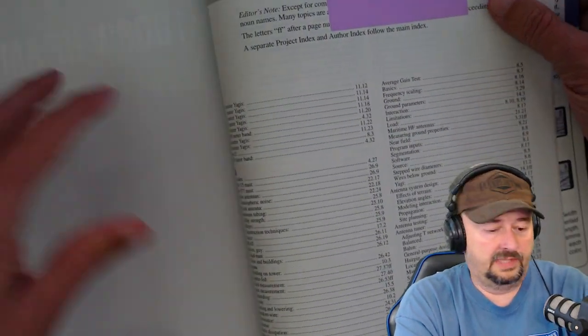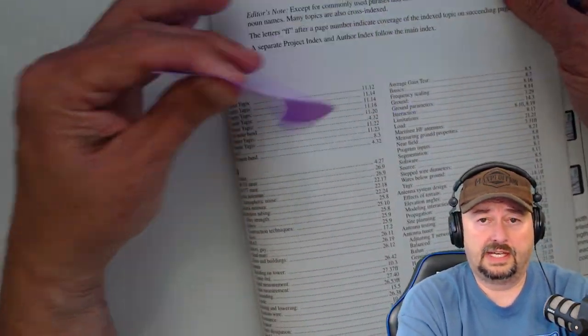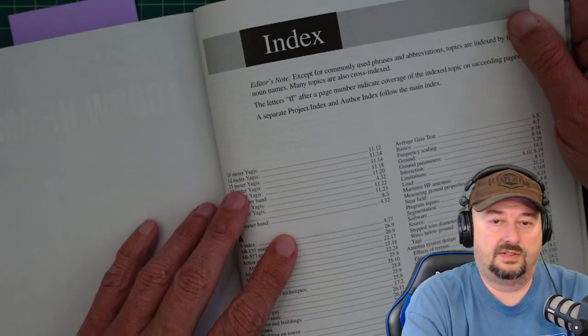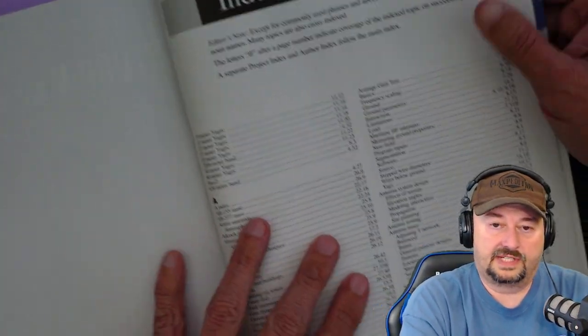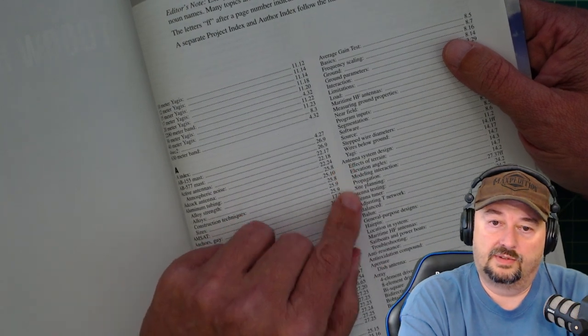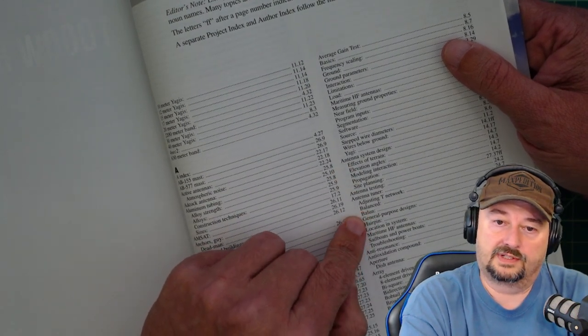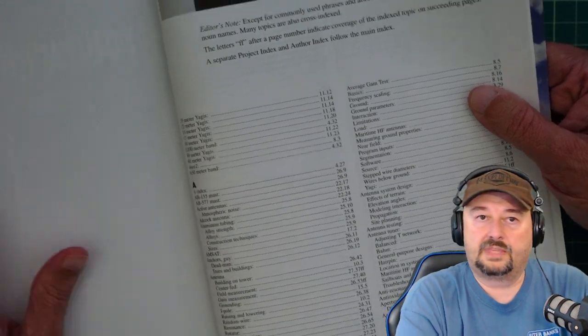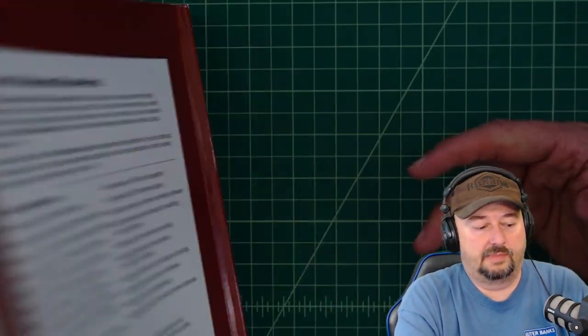And then last, it has a really comprehensive index that you can use to find things in the book. So, for example, if you were looking for antenna tuners right here, just in T-Networks or Balanced, just handy, all-around good information.